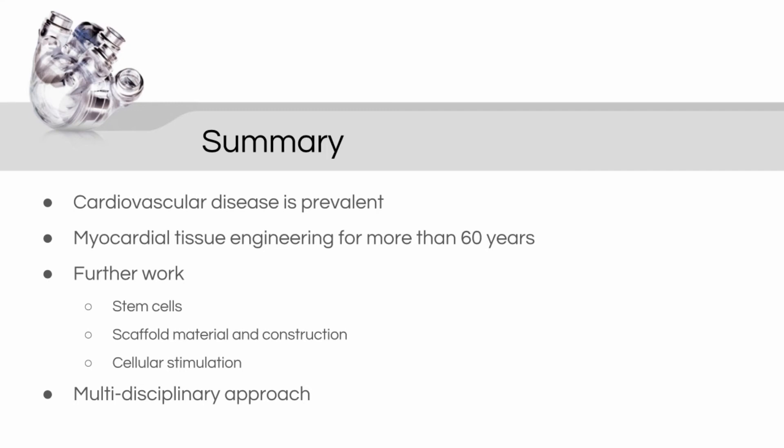In summary, cardiovascular disease is the number one killer in western populations, resulting in a number of corrective surgical techniques, however each with their own limitations. The construction of myocardial tissue engineering began in the 1950s and development currently stands at the in vitro study of scaffold material types alongside stimulus in cellular environments. In vivo study has also been initiated; however, much work still remains before the use of engineered heart tissue for human repair.